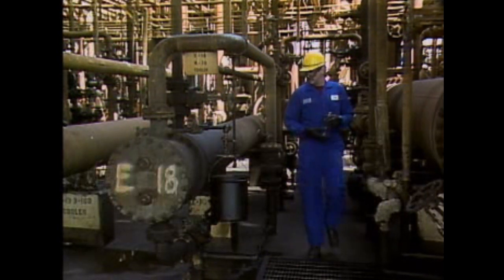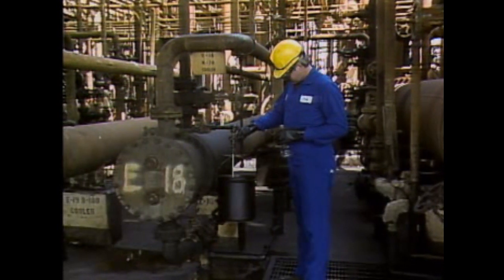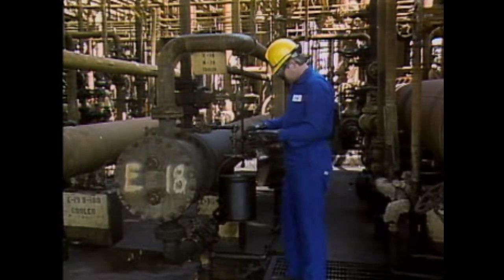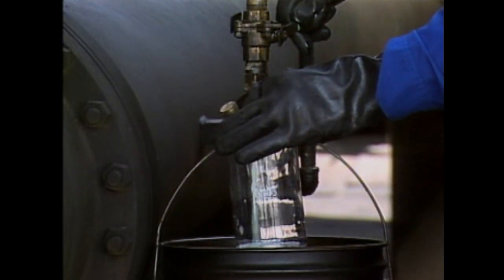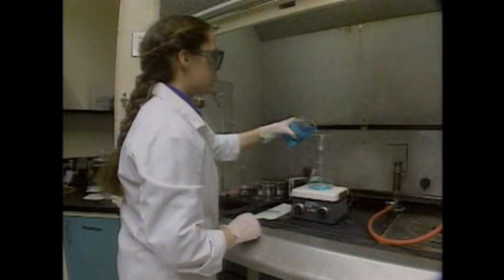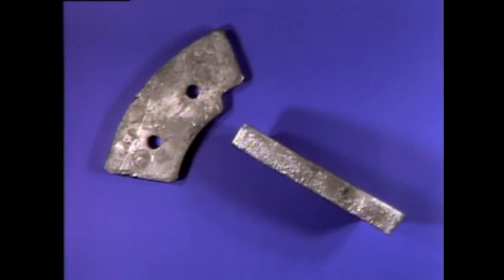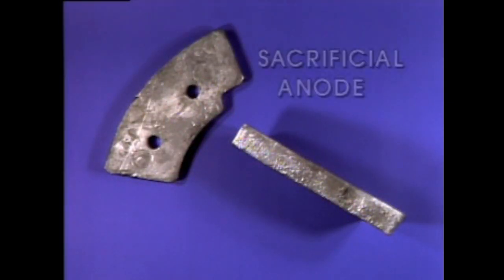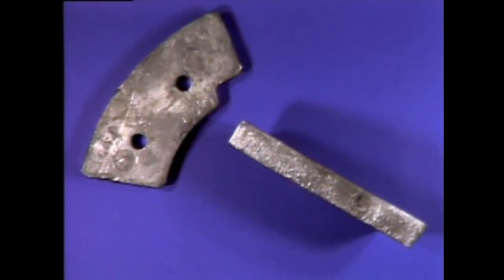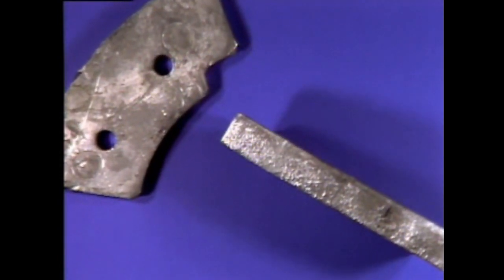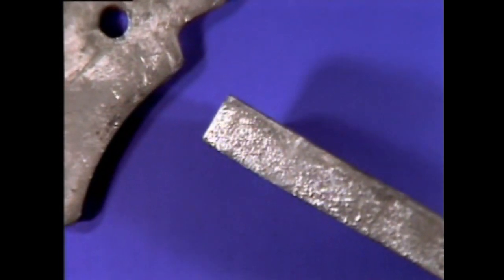One way to check for tube leaks is to take and analyze a sample of the lower pressure fluid. When a leak occurs, the high pressure fluid leaks into the low pressure fluid. In some cases, you may be able to tell there's a leak by just looking at the sample; in other cases, a lab test may be required. To prevent leaks in some applications, the process fluids pass through filters or strainers to remove impurities that can erode the tube metal. Also, chemicals may be added to the fluids to control corrosion. Another method of controlling corrosion involves using a device called a sacrificial anode.